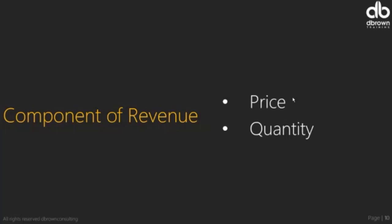Irrespective of the industry or business model you operate, you must always have price and quantity — take it or leave it. For a manufacturing firm: how much are you selling your product — per carton, per unit, in pieces? Then the total quantity sold at that particular period. Multiply them together and it gives you the revenue. In telecom, price is average revenue per user and quantity is total subscribers.